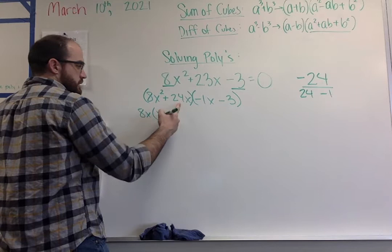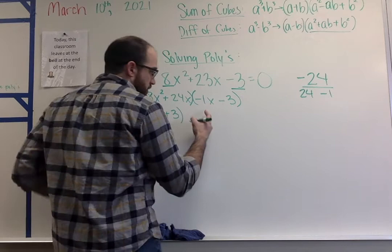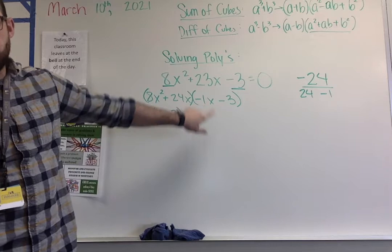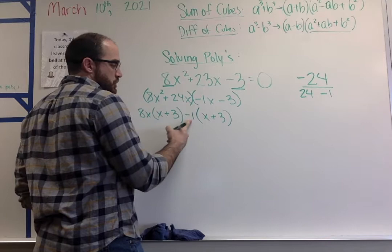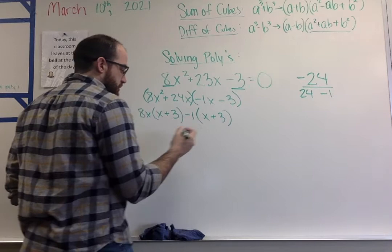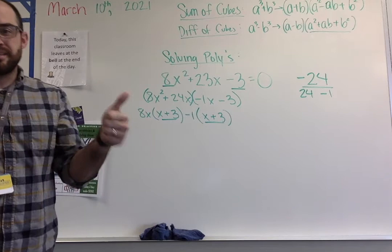From here, this is where our four term polynomials work the exact same way. I'm going to put parentheses around the first two and the second two, and factor out what we can from each. So the first one I can factor out 8x. What's left when I divide? 8 divided by 8 is 1, so I have 8x(x + 3). For the second term, I want to get rid of this negative. We can't have a negative value for my first term, so I'm dividing both by negative 1. So I have -1(x + 3).